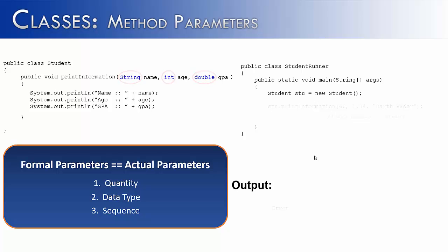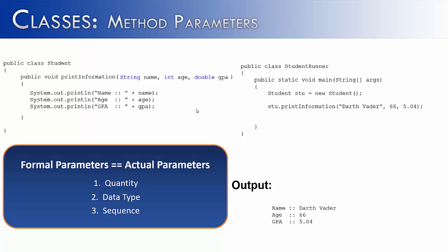This last example shows the correct implementation of the printInformation method. Notice the name is a String and it's first; int age is second; and double GPA is last. Technically, you could have an integer for the GPA parameter because, using a widening conversion, you can pass an integer into a double — you could not pass a double into an int. So saying data types must be the same is true, but there's a small exception for widening conversions. This would work just fine and print out name: Darth Vader, age: 66, GPA: 5.04.